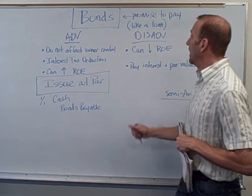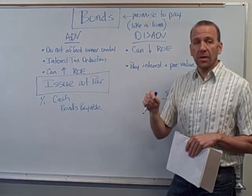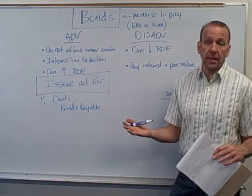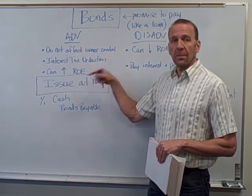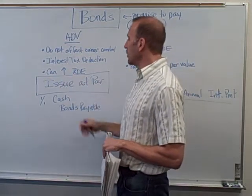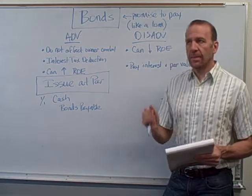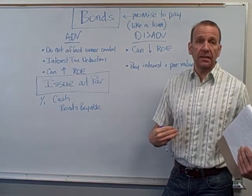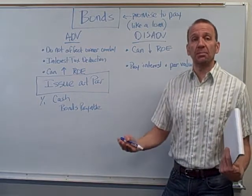Advantages of bonds for corporations: it doesn't affect the owners' control at all, because bond holders are debt holders, not common shareholders. When they pay interest, that interest is tax deductible — unlike dividends paid to common shareholders, which are not tax deductible. Bonds can also increase return on equity, because if the corporation takes in money from bond holders and invests it at a higher interest rate than what they're paying out, return on equity increases.